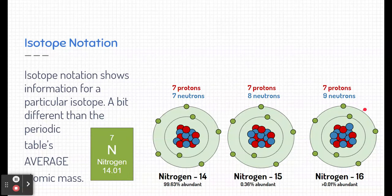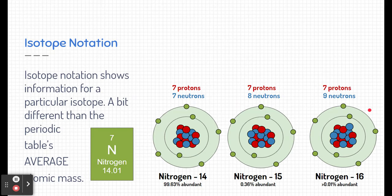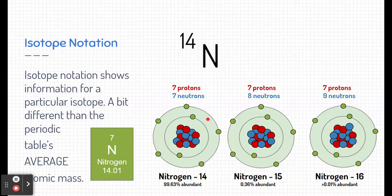I want to talk lastly about isotope notation. Typically, we need to differentiate between the different isotopes, and so we usually use some type of symbols to do so. Now, you're going to see here nitrogen-14 has a symbol that looks like this.